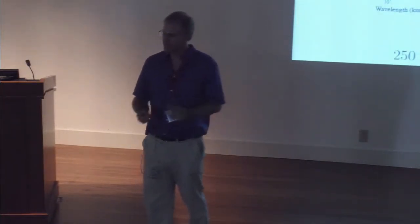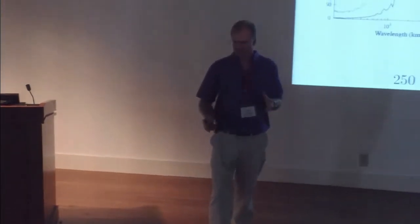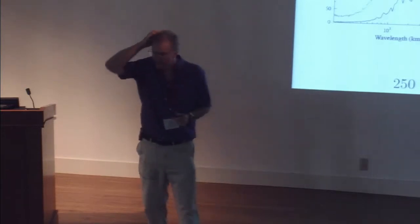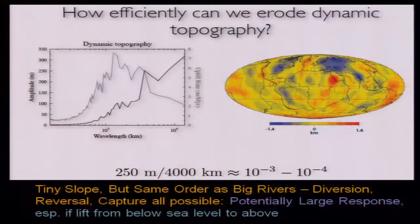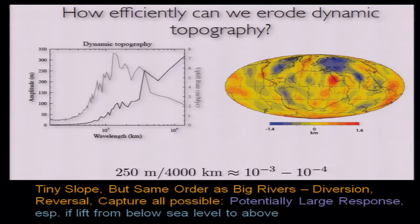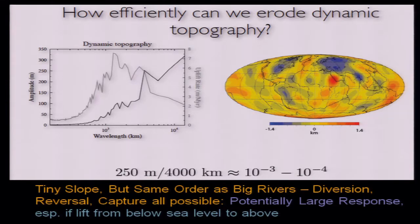It's also a smooth model — they use only a radial viscosity structure and it's a global spherical harmonic model out to degree 128, starting from smooth tomography, so it won't resolve small features. The slope you might get off the sides of one of these highs — if it's only up to 250 meters at 4,000 kilometers distance — is tiny. That's not going to drive much erosion. But it is on the order of the same slope as most really big rivers, so it's enough that you could back-tilt the Amazon River and deflect the flow, cause stream capture, and get a potentially large response even though at first it seems like a tiny effect.